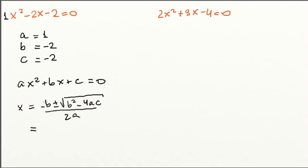So, minus b is 2, plus or minus square root of b squared is 4, minus 4 times a, which is 1, times c, which is negative 2. All of this divided by 2 times a, which is 1.